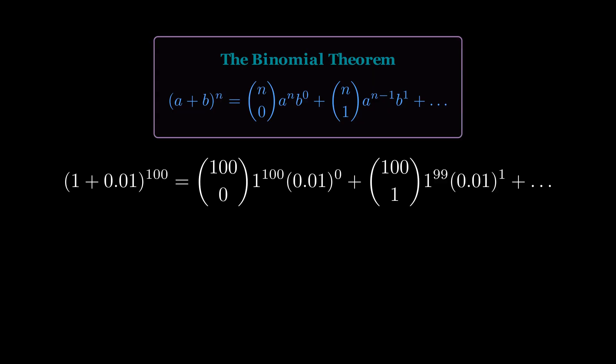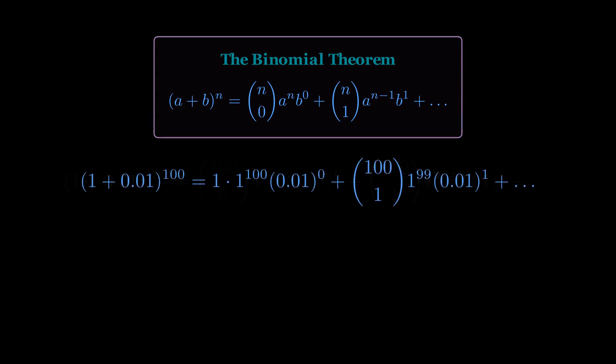Let's break it down piece by piece, starting with the very first term. This first part, 100 choose 0, asks how many ways can you choose 0 items from 100? There's only one way to do that. Choose nothing. So, that symbol becomes the number 1.